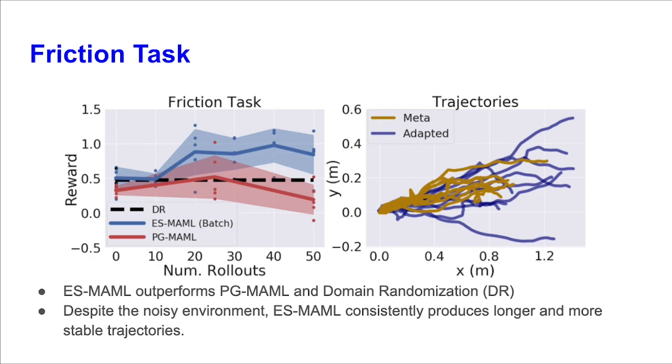Similar to before, we again see that the blue curve, representing our method, gradually increases its reward. This is also shown on the figure to the right, where the trajectories are displayed by a bird's-eye view, and the adaptive policy's trajectories are farther than the meta-policies.